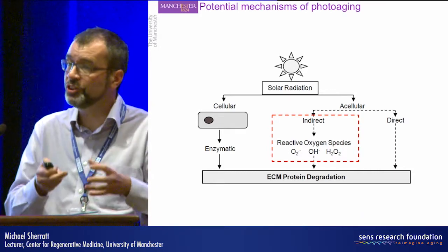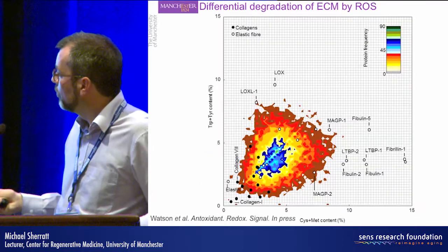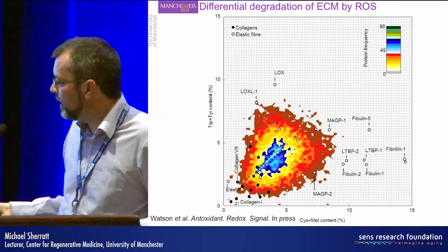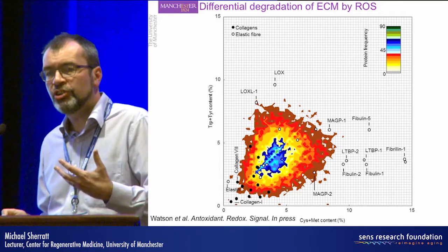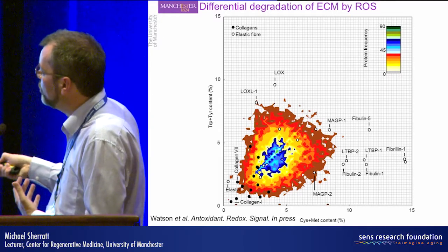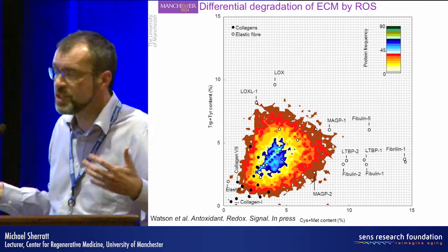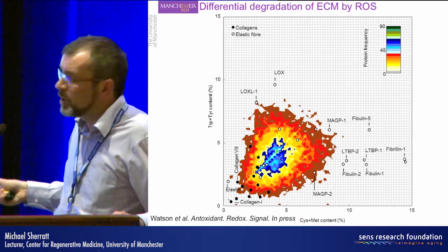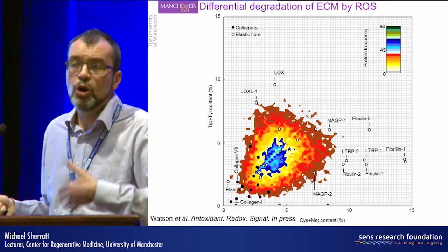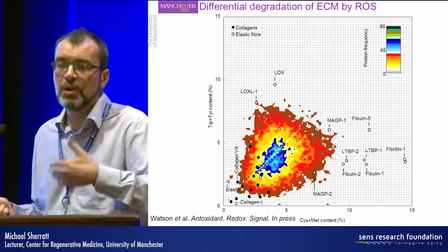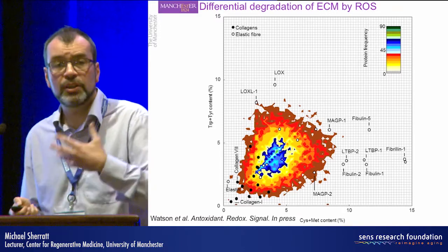Microfibrils act to sequester and bind TGF-beta in the tissue. If you alter microfibril structure, you may disrupt that binding. So we proposed in Antioxidants and Redox Signaling that fibrillin may play a role in aging as both a victim and a villain — a victim of reactive oxygen species, perhaps produced by UV in skin but potentially endogenous in other tissues, and a villain by triggering downstream remodeling, either inducing cells to make proteases or releasing TGF-beta and promoting fibrosis or tissue stiffening.